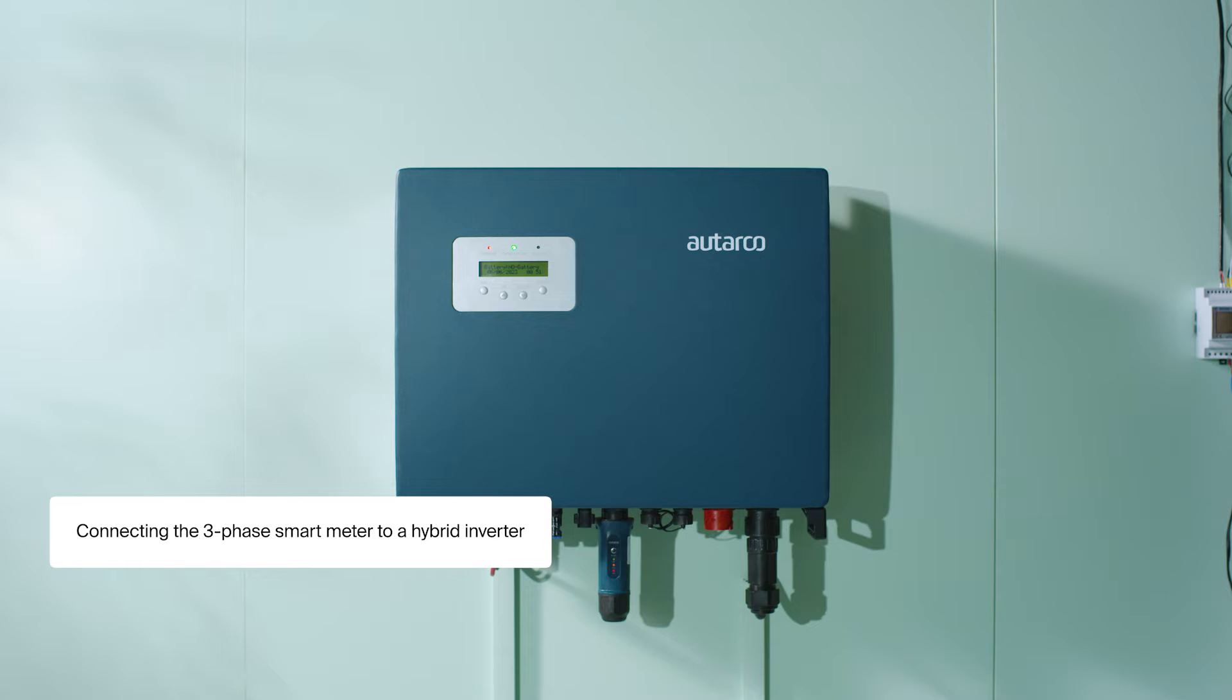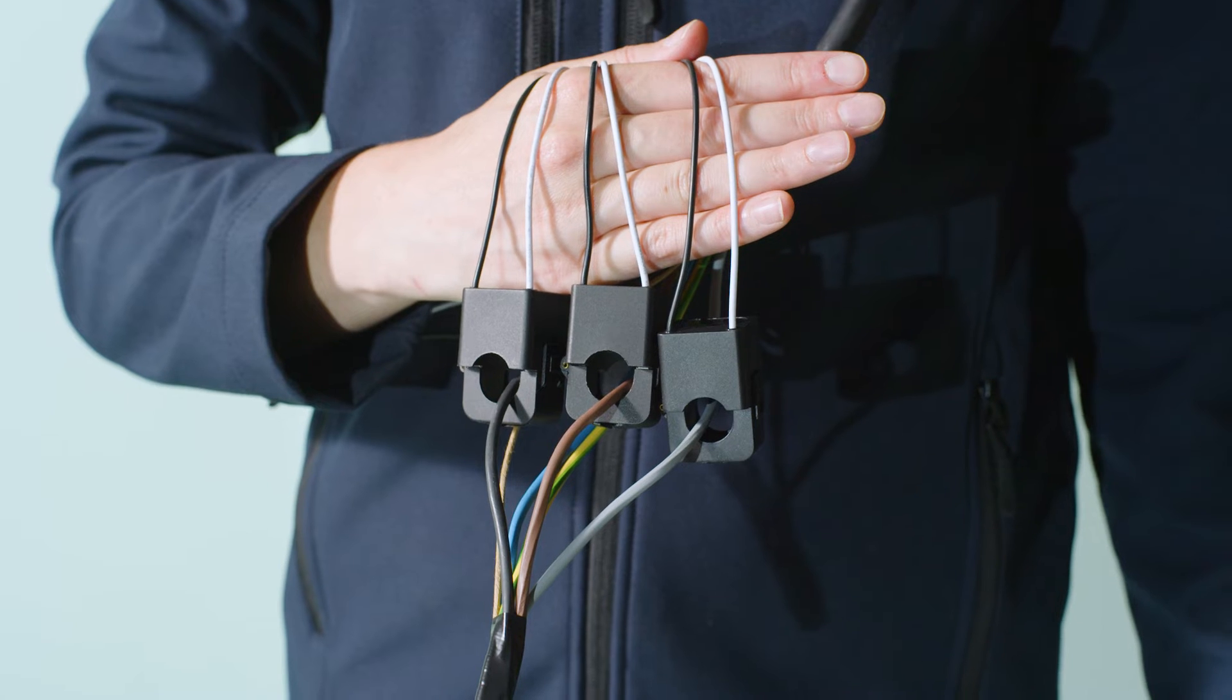Step one: Connect the wires of the clamps to the smart meter. Make sure that the wires of all three CT clamps are ordered similarly.